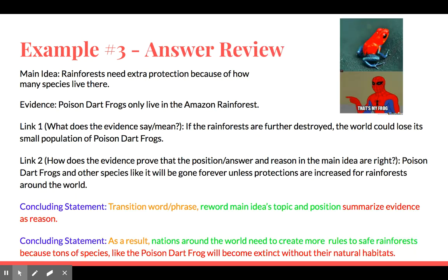Let's look this last one over — answer review. We have our color coding so you can see which part fulfills which part of the formula. Transition word: 'As a result' — cause and effect, always a good one here. Rewording our main idea topic and position: 'nations around the world need to create more rules to save rainforests.' Then summarizing the evidence as our reason: 'because tons of species like the poison dart frog will become extinct without their natural habitats.' We're showing why this is really important, putting all these pieces together and coming up with a concluding statement — a final message to leave our reader before they move on.